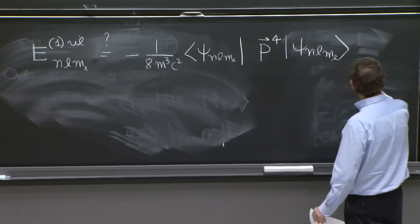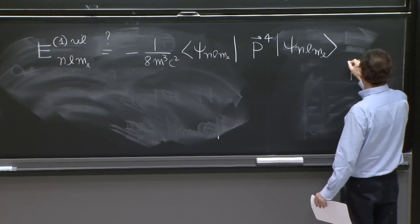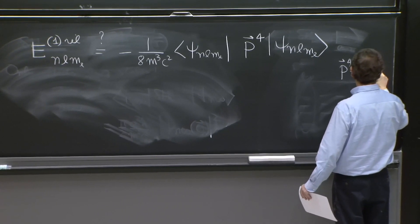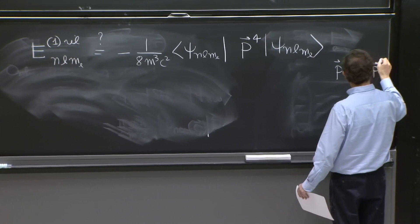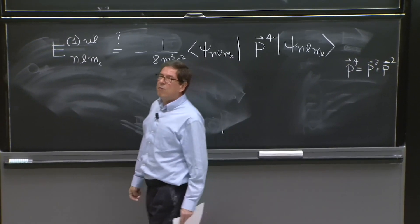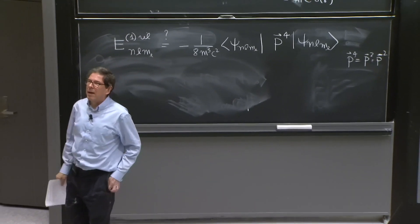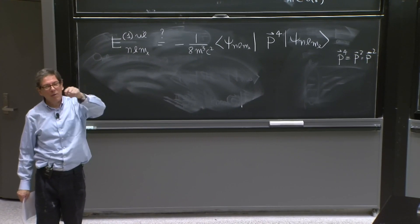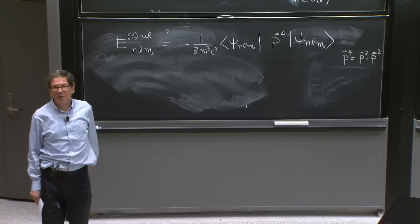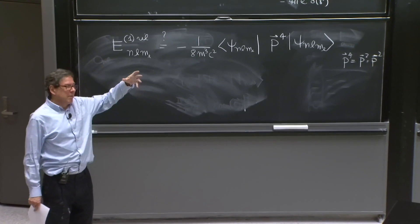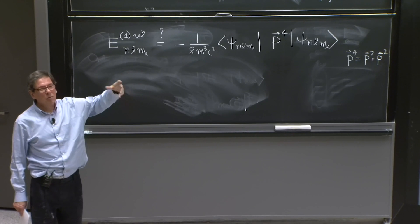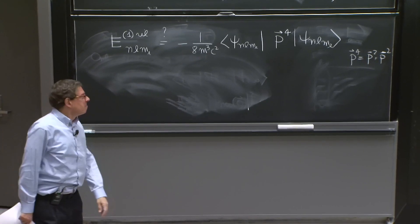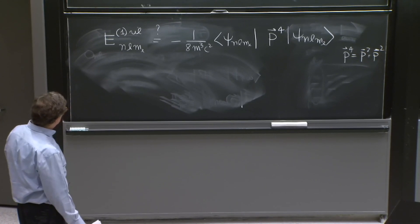Now, recall that p to the fourth, the way it was given, is really p squared times p squared. Now, you have four things that have to be multiplied. So it's not px to the fourth plus py to the fourth plus pz to the fourth. It is px squared plus py squared plus pz squared, all squared. Just in case there's an ambiguity.